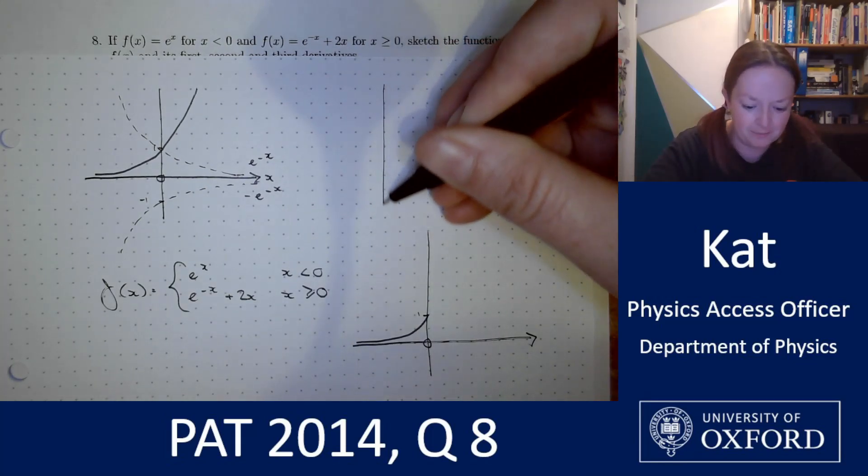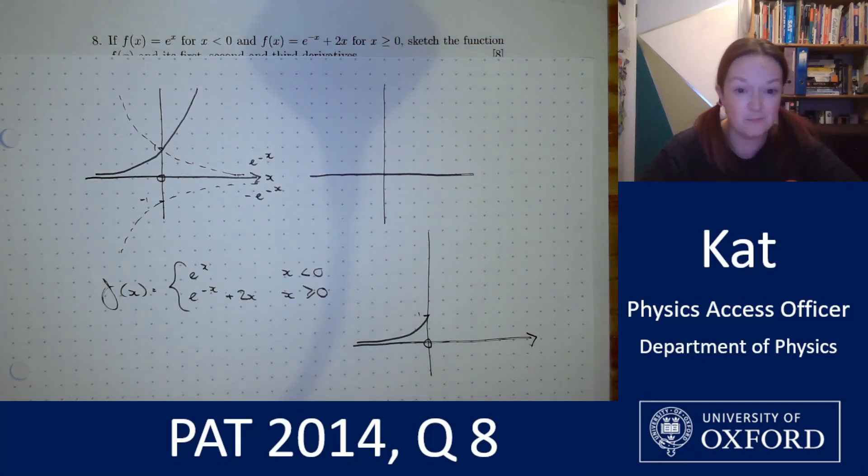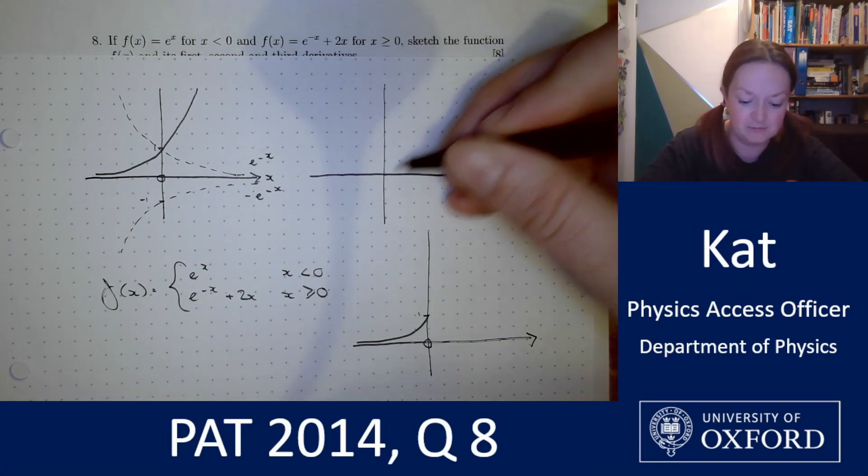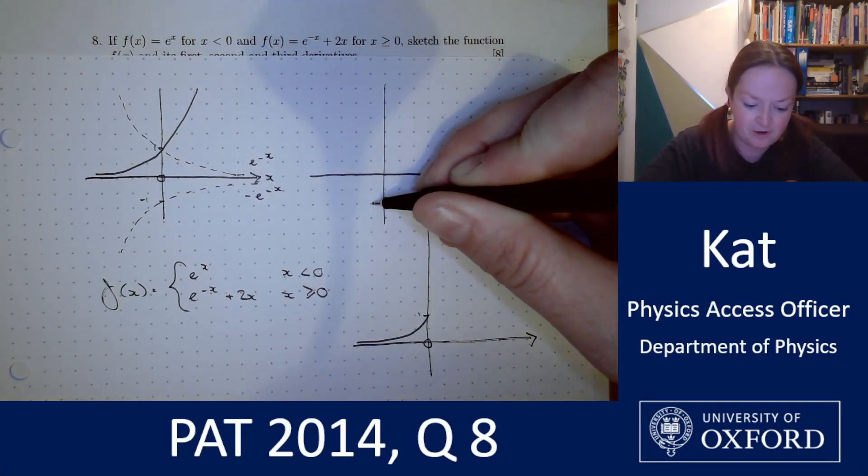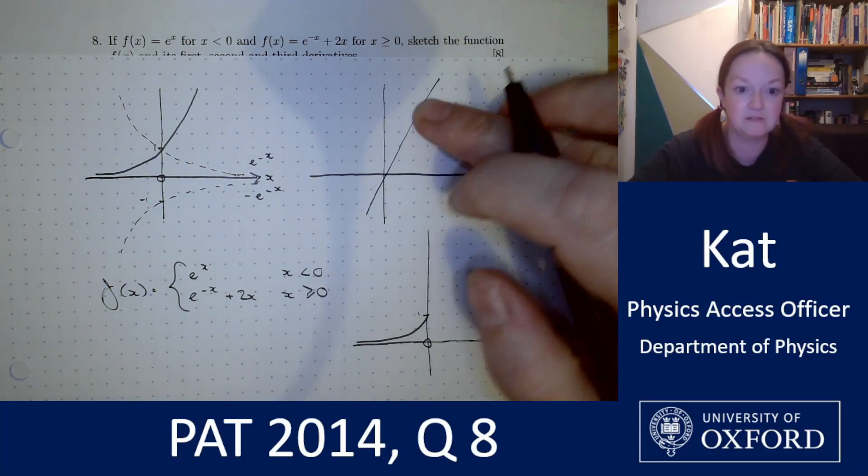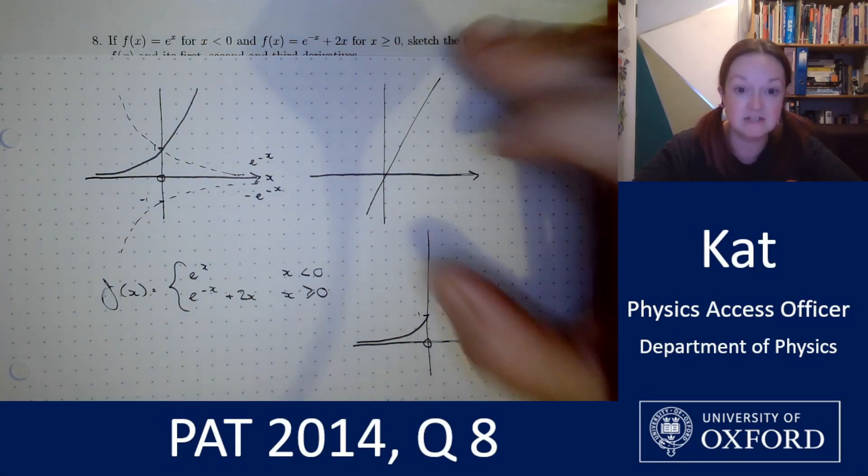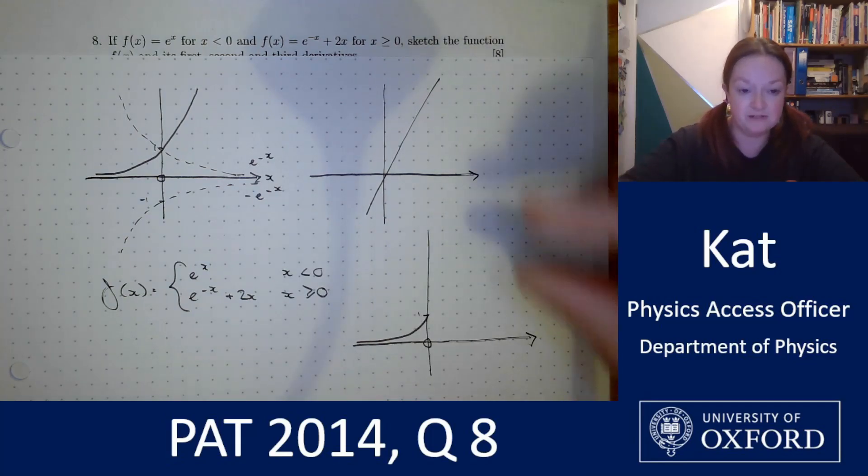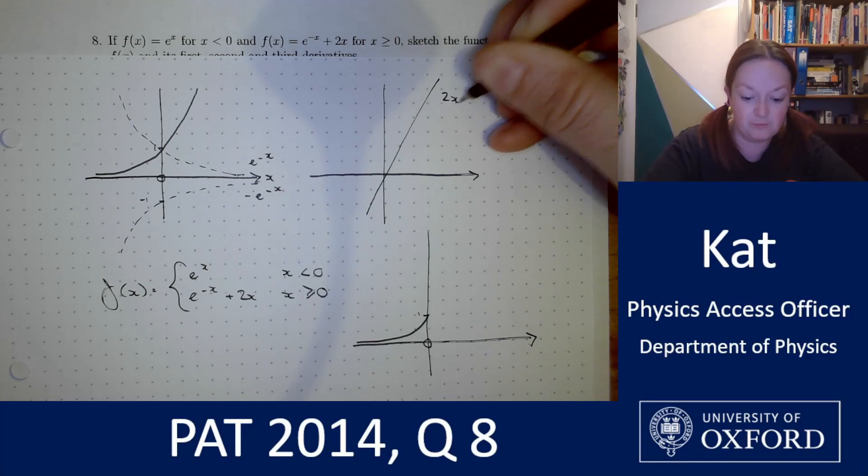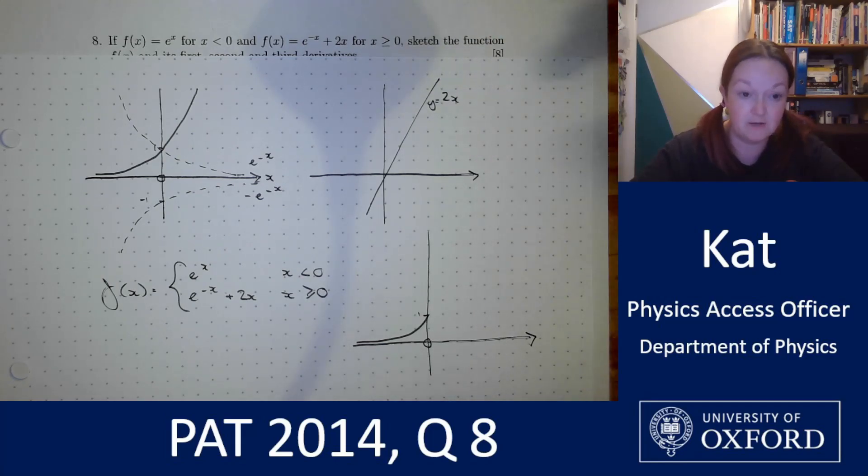This might not make more sense to you but to me this really helps because I know that the curve, a straight line rather, y equals 2x is going to look like this and I know that 2x plus e to the negative x means that I've got a curve y equals 2x shifted vertically by the value of e to the negative x.